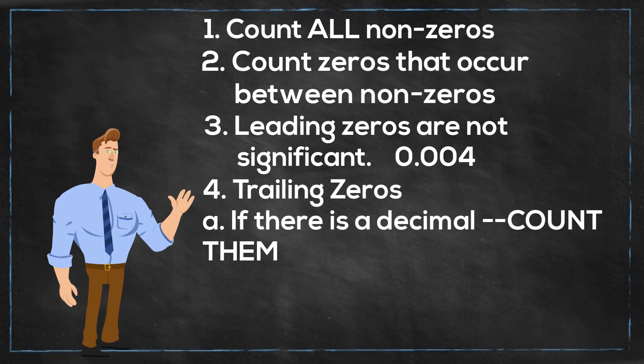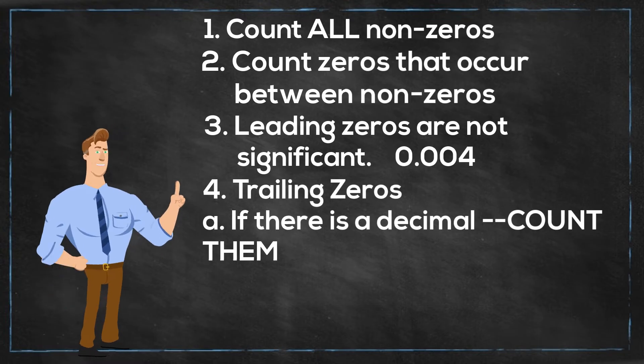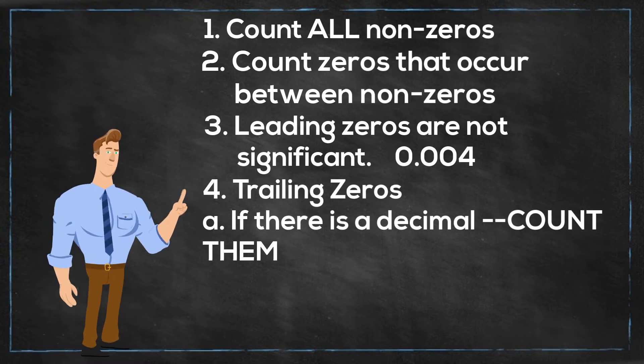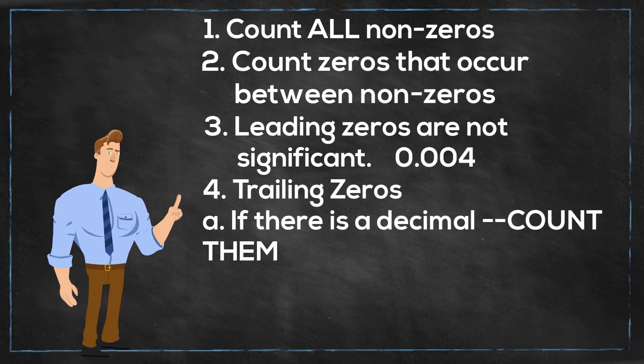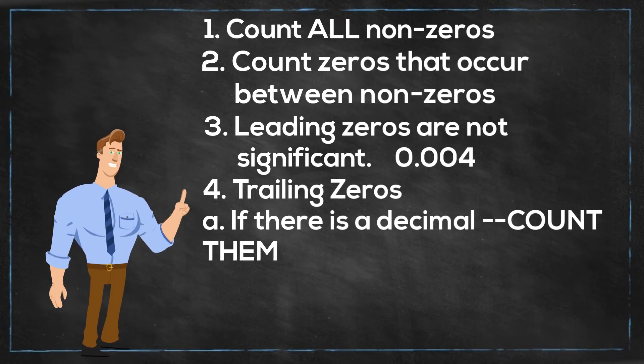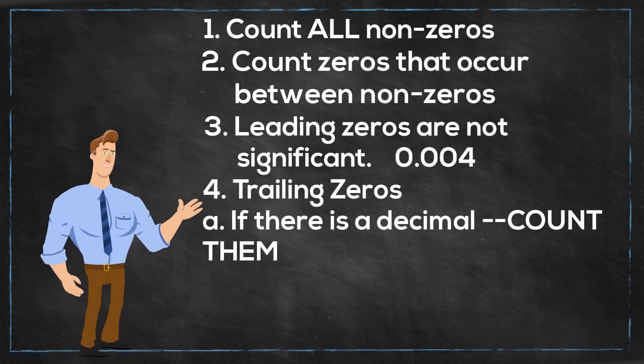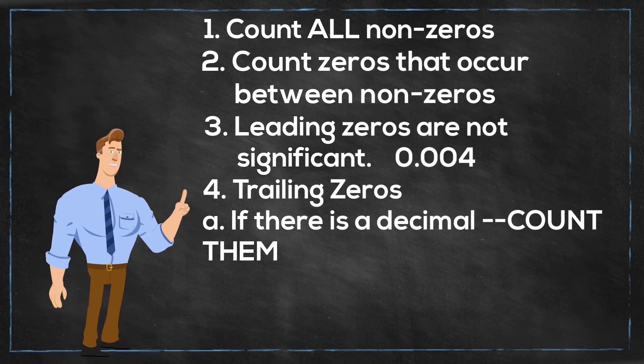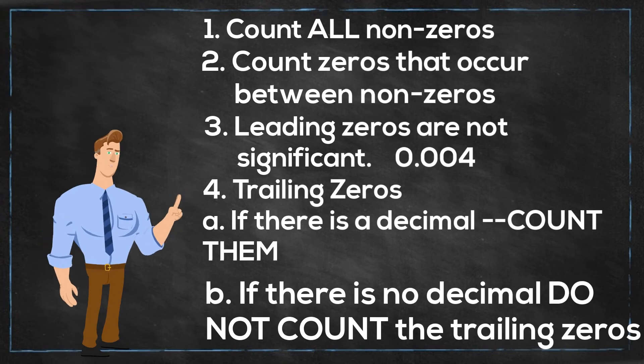Trailing zeros are zeros at the end of a number. If there is a decimal, count them. The way I remember this is that zeros always need a decimal to help them. And then finally, if there is no decimal, do not count the trailing zeros.